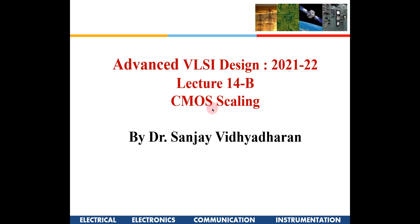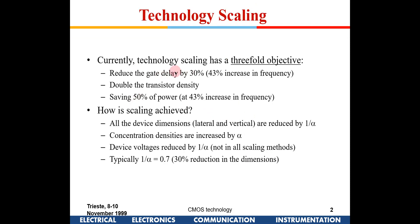We will quickly look at another small topic known as CMOS scaling. As we discussed in the very first class, from 180 nanometer technology and beyond, with every three to four years the technology has been scaled. When I say technology has been scaled, it means the minimum feature size of the device is being decreased, giving higher packing density and better overall performance because of decreased capacitances associated with these smaller-sized devices.